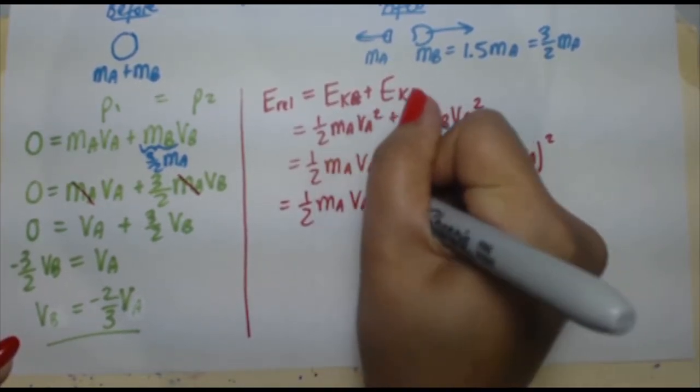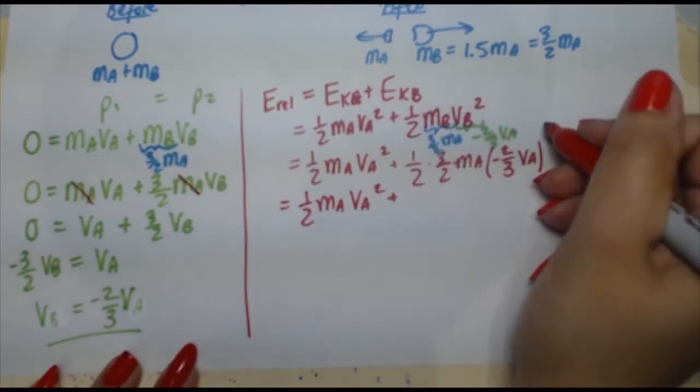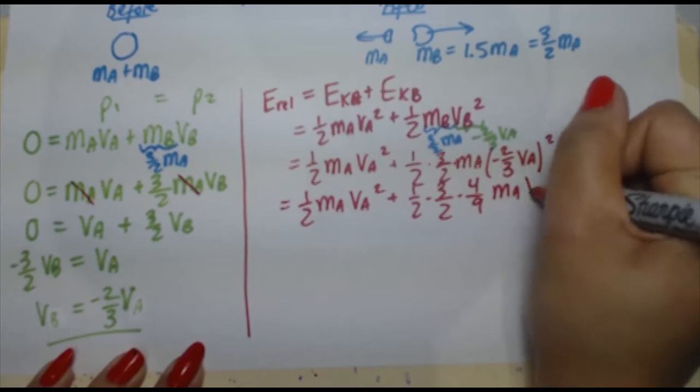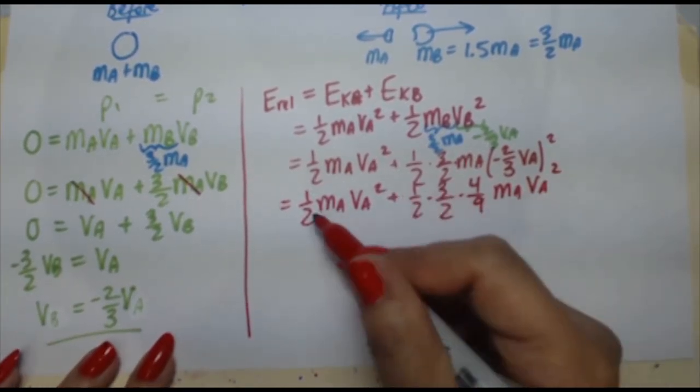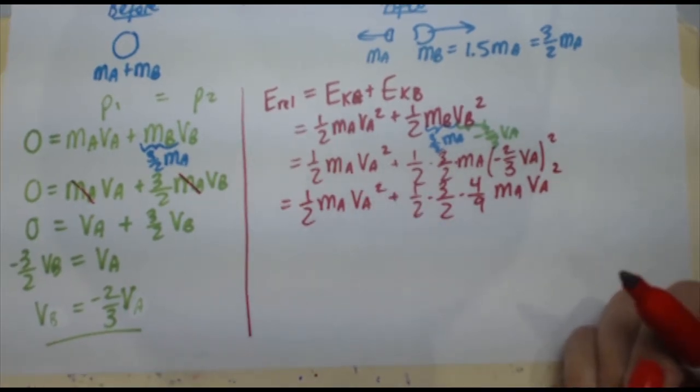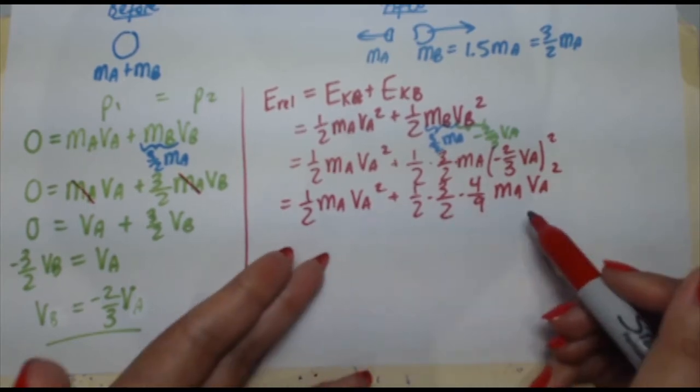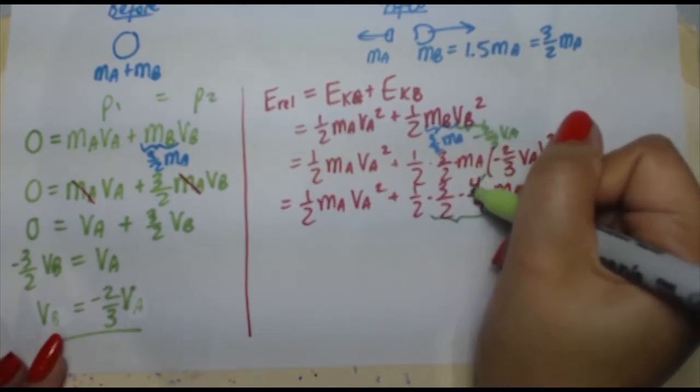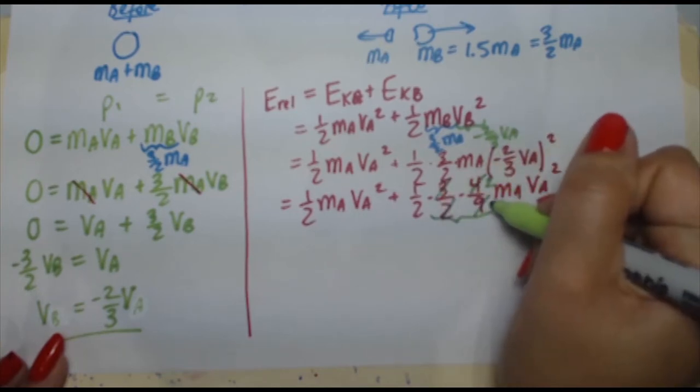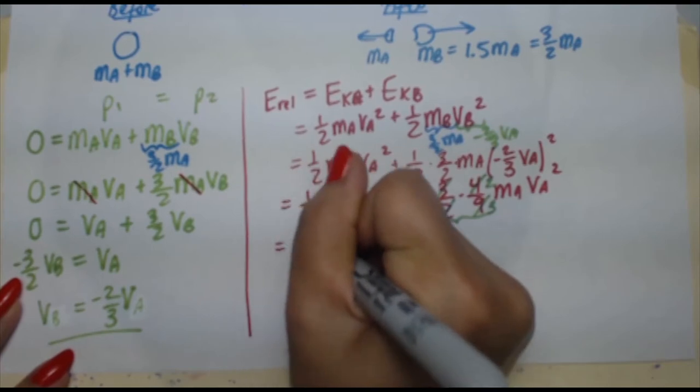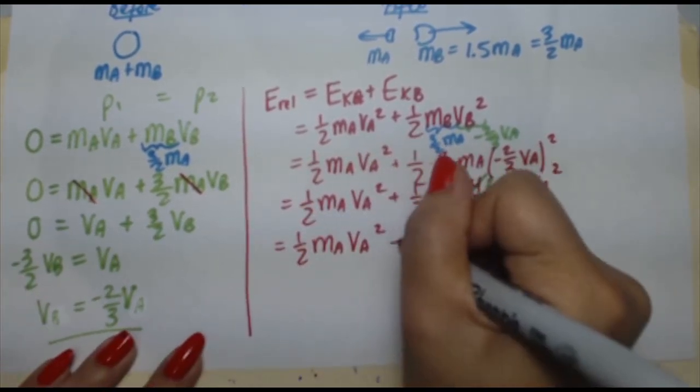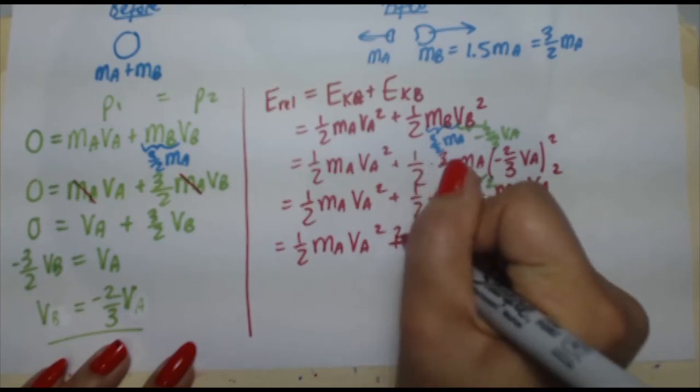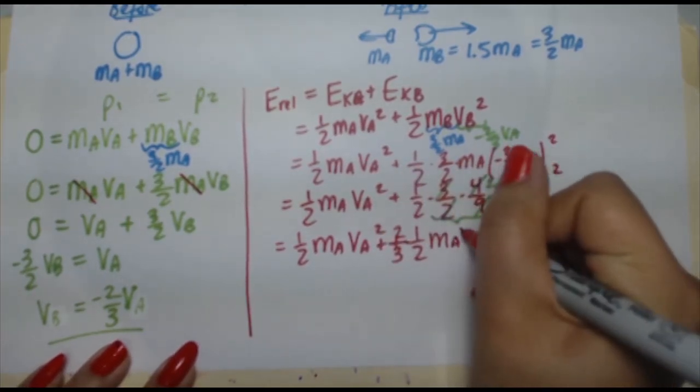So 1 half mA vA squared plus, if I square this, I'm going to get 4 ninths. So 1 half, 3 halves, 4 ninths mA vA squared. I'm going to keep the half here, because I've got a 1 half mV squared, and that's the expression for kinetic energy of A. So if I can get something like that here, maybe I can combine the two expressions together. So the 4 cancels out with the 2, you're left with the 2 there. The 3 cancels with the 9, leaving you with the 3 here. So you get 1 half mA vA squared plus, I'll bring the 2 thirds in front, so 2 thirds times 1 half mA vA squared.